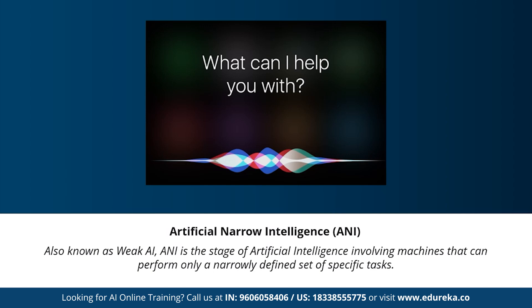Artificial narrow intelligence, also known as weak AI, is a stage of AI that involves machines that can perform only a narrowly defined set of specific tasks. At this stage, machines don't possess any thinking ability — they just perform a set of predefined functions. Examples of weak AI include Siri, Alexa, AlphaGo, Sophia, and self-driving cars. Almost all AI-based systems built to date fall under the category of weak AI or artificial narrow intelligence.